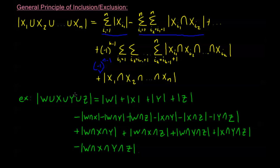This may seem tedious compared to just counting directly, but when you're dealing with many sets it's often easier to use the Principle of Inclusion and Exclusion. That's it for counting unions of sets. In the next sections we'll cover cardinality, selections, and arrangements — and all the core concepts from these last several videos will be very important there. In particular, we'll be using the multiplication principle a lot in the forthcoming videos.